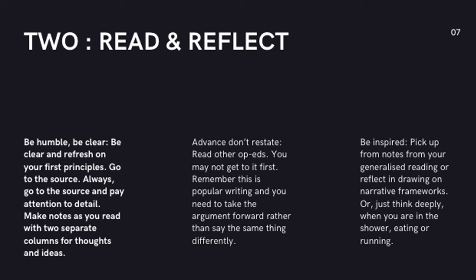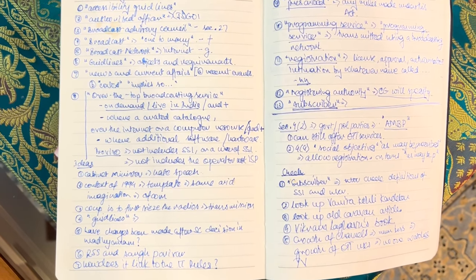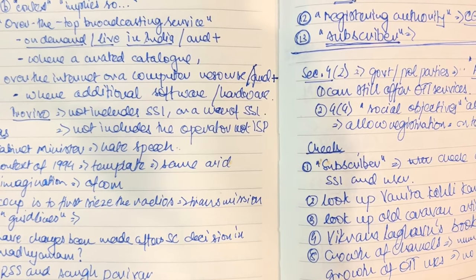This brings me to step two: read and reflect. No matter how great you are as an expert, be humble about your ability. Be clear and refresh on your first principles. Go to the source. If I'm writing about the Broadcasting Services Bill, I will read the entire text of the bill, read the Press Information Bureau report, and check the ministry's website — all primary sources. I make notes while reading all these materials, usually in two columns in handwritten form: one pointing out the main features or summary of what I'm writing about, and below that my ideas, my analysis, what I want to write. I go back to these notes again and again alongside the primary documents I'm commenting upon.